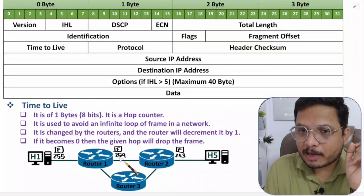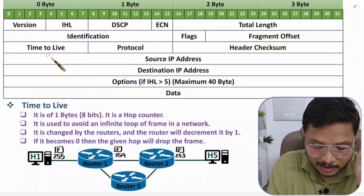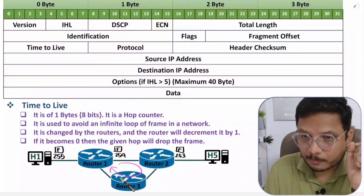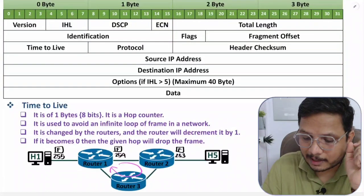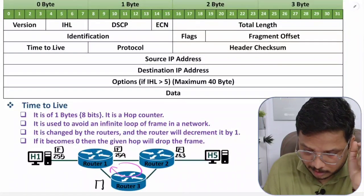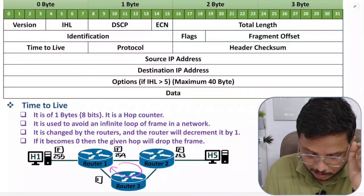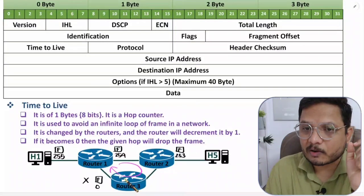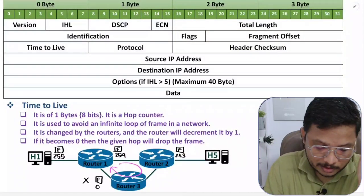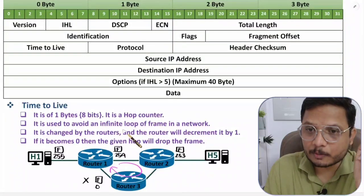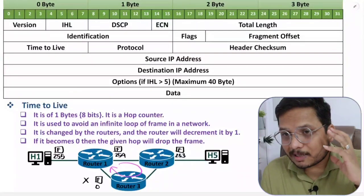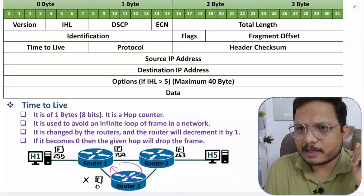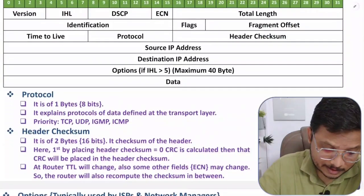The reason we have TTL is to avoid infinite loops. For example, if a frame is going in a routing loop, when TTL reaches 0 at a router, that router will drop the frame and not forward it further in the loop. This is how TTL avoids infinite loops in the network. Common exam questions include: how many hops can there be, and why should we have the TTL field.